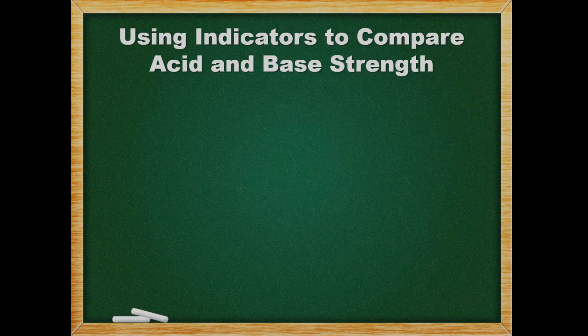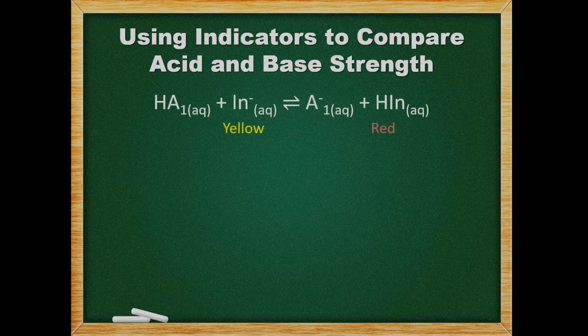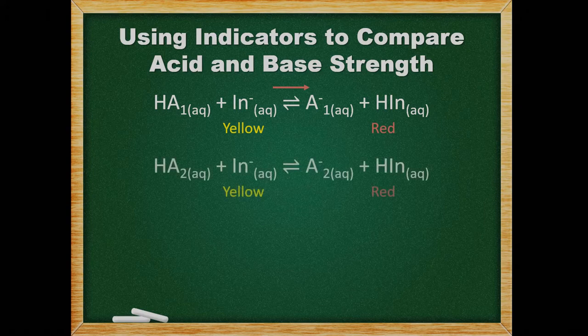One way to compare the strength of acid-base conjugate pairs in the lab is by using indicators. An equilibrium equation for a monoprotic weak acid reacting with an indicator would look something like this. If the weak acid is stronger than the acidic form of the indicator, then the equilibrium will shift to the right, forming more of the acidic form of the indicator. Since the acidic form of the indicator is red, the red color would predominate in the solution. However, if we had an acid that was weaker than the acid form of the indicator, then the reaction would shift left, making more of the basic form of the indicator and turning the solution yellow.